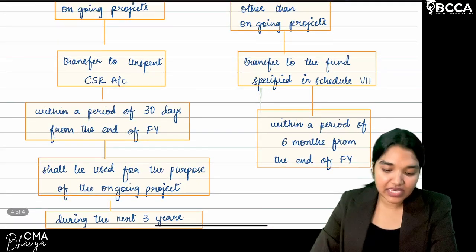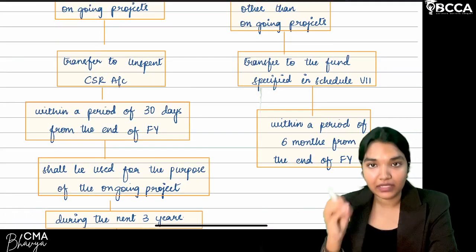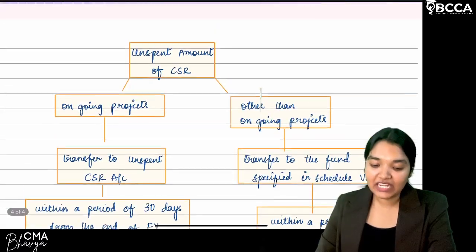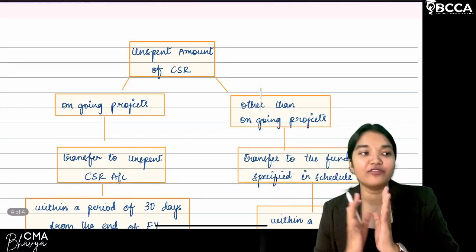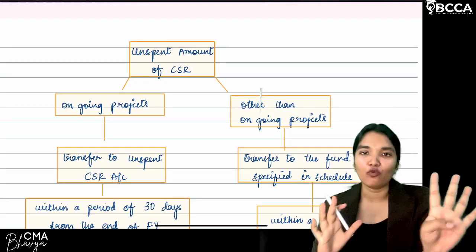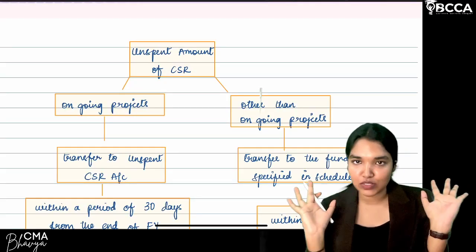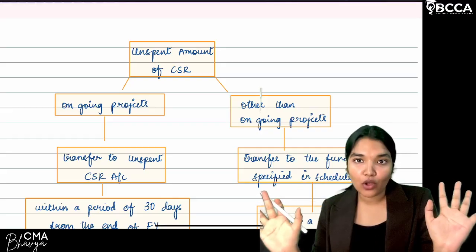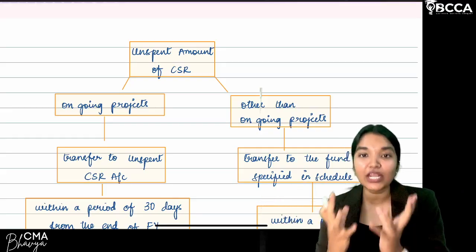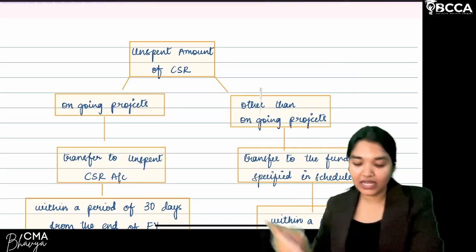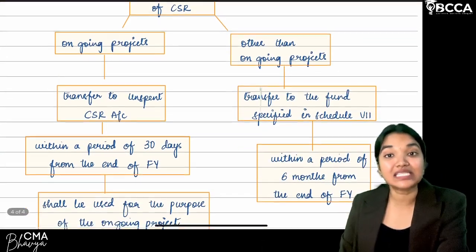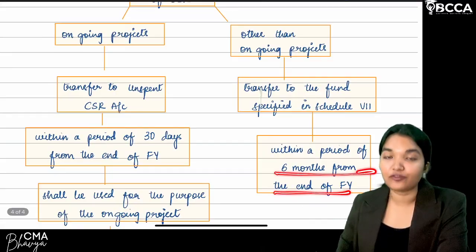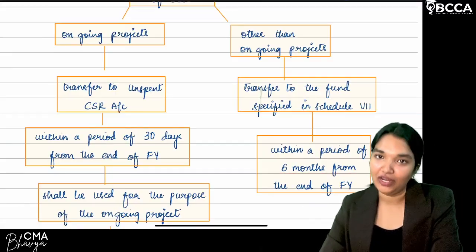If the unspent amount is not related to an ongoing project — for example, if ₹5 lakhs was allocated but only ₹4 lakhs was spent and the project is already completed — that remaining ₹1 lakh must be transferred directly to the fund specified under Schedule 7 within 6 months from the end of the financial year.